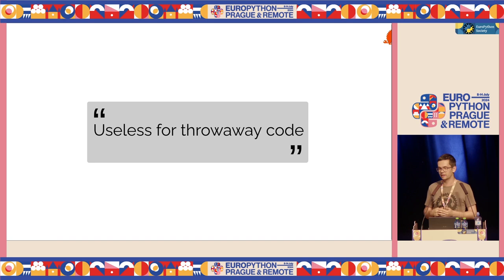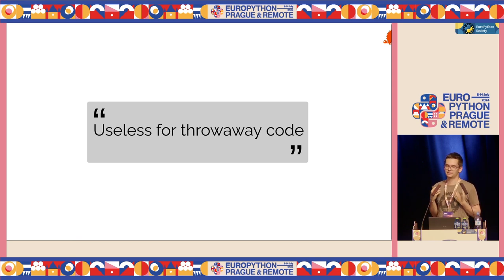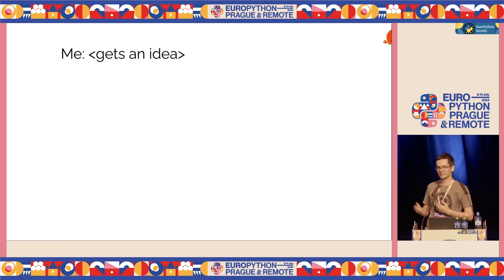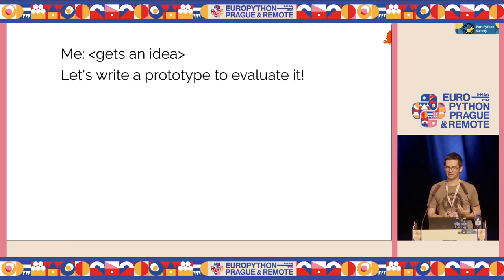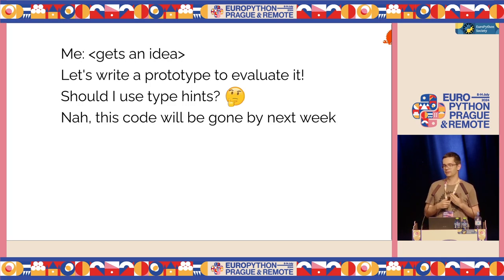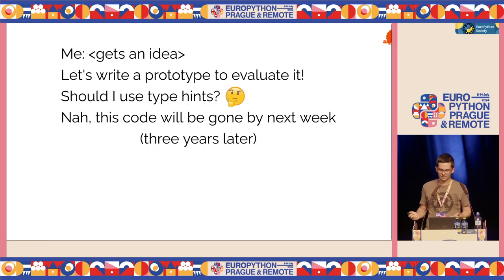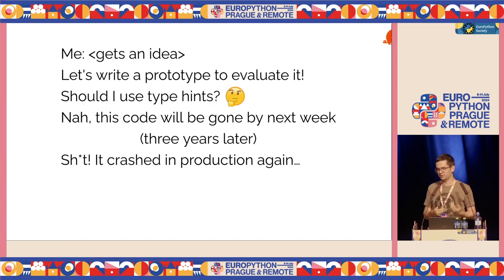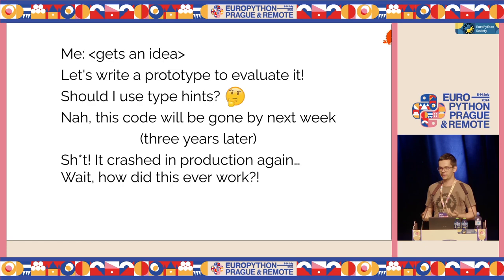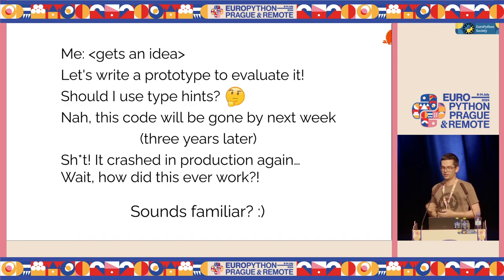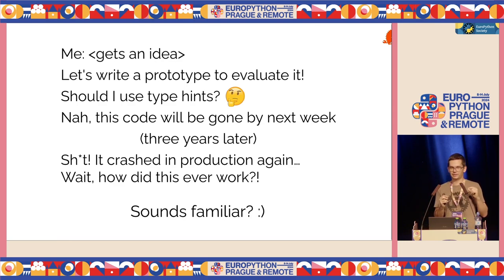The second concern I saw is that type hints are useless for throwaway code and small Python scripts. I also used to think this. But I kept encountering the following situation: I'd get some idea, implement a prototype, think 'this code will be gone by next week, it doesn't need type hints' — and then sometime later, that prototype is running in production, and it's crashing, and I have no idea what's going on. So if this sounds familiar, I'd really encourage you to use type hints as much as you can. Unless I'm literally in an interactive terminal, I use them everywhere, even for a five-line script.